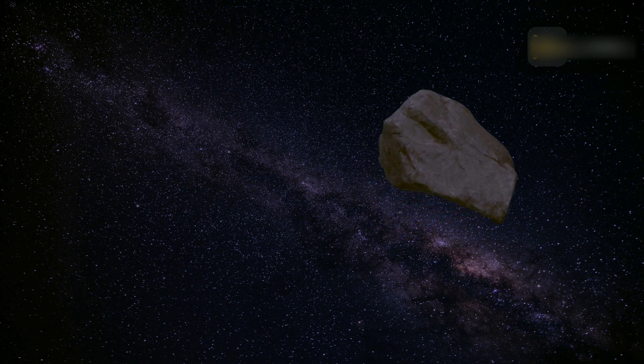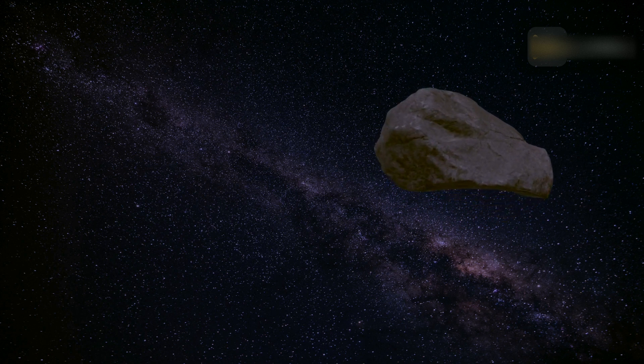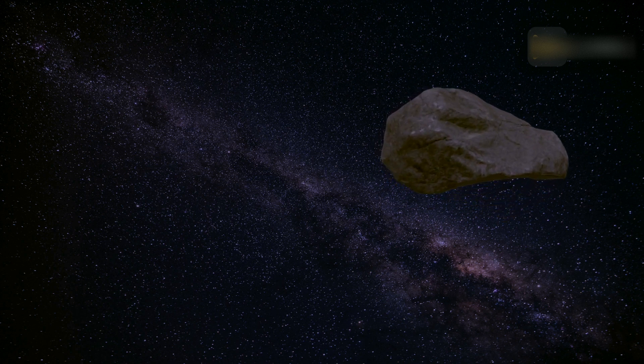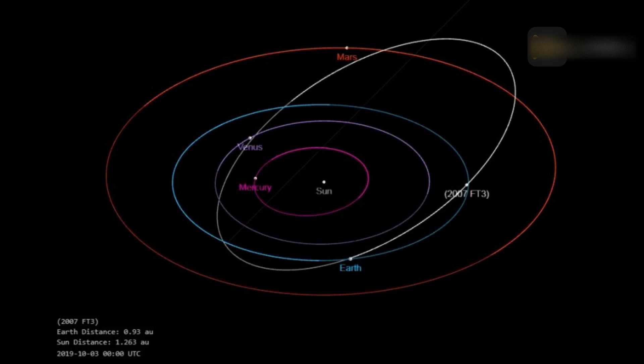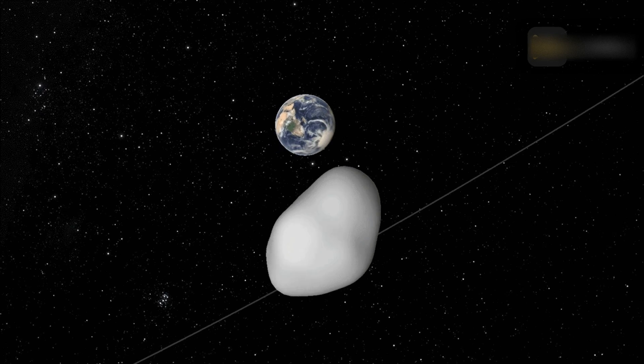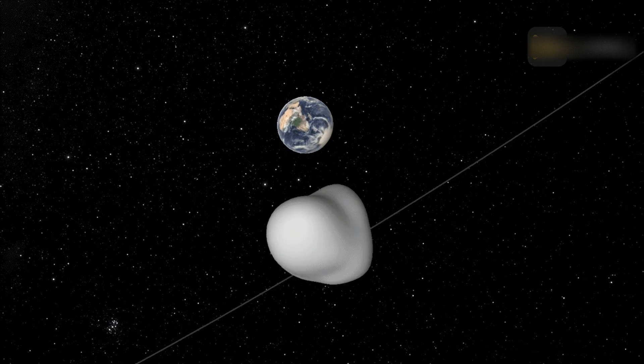However, this asteroid lost its flight path with only a short observation arc of 1.2 days. Since its disappearance, NASA's Center for Near-Earth Object Studies, CNEOS, has been trying to determine where the asteroid will go and track it along with 32,000 other near-Earth asteroids.